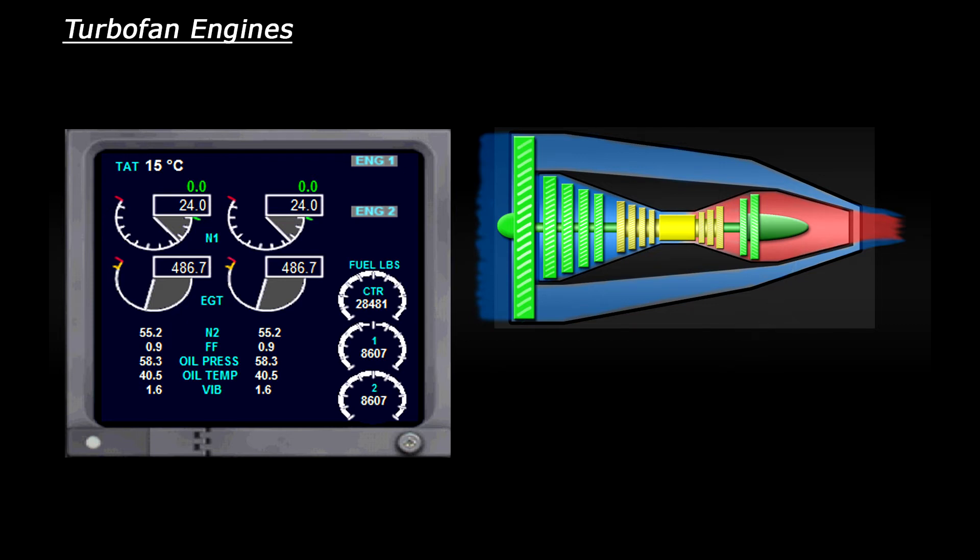On some aircraft this may be replaced with ITT which is interstage turbine temperature. It serves the same purpose however it takes the temperature reading from between the turbine stages not the exhaust.